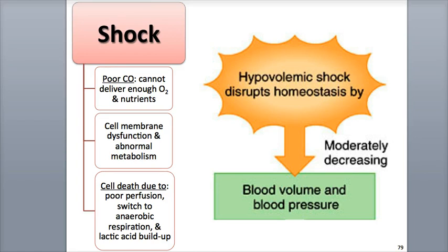When the cardiovascular system cannot transport enough blood flow through cardiac output to supply oxygen gas and nutrients to tissue cells, the condition of shock is induced. In the absence of adequate oxygen, tissue cells switch their metabolism from aerobic to anaerobic respiration in order to generate enough ATP. This causes a buildup of excessive lactic acid in the body's tissues. If shock goes untreated, cellular death and organ damage may occur.